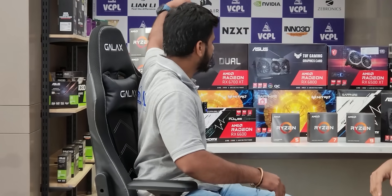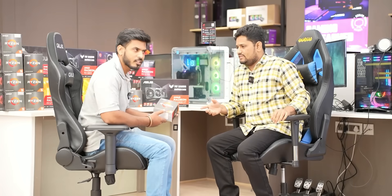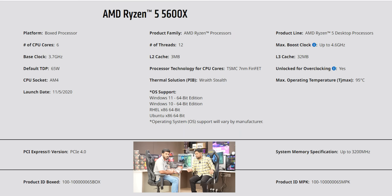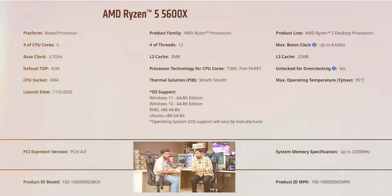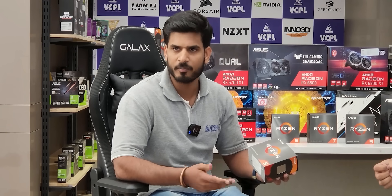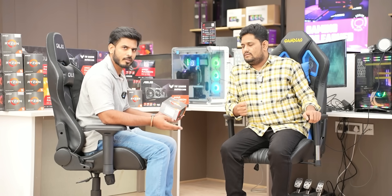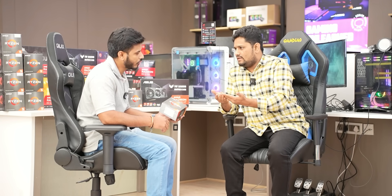For the 70,000 rupee budget, with the Ryzen 5 5600X, the compatible B450 motherboard needs a BIOS update, while B550 supports it automatically. The processor costs around 17,500 rupees. The compatible graphics card for this budget is the RX 6500 XT 4GB, priced around 13,500 rupees. This brings the total to around 40,000 rupees for just processor and GPU.